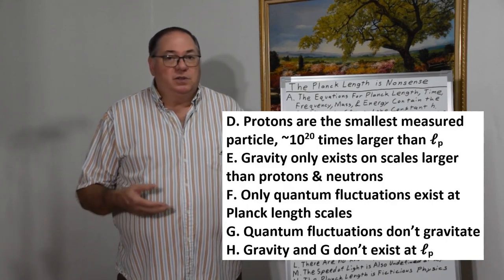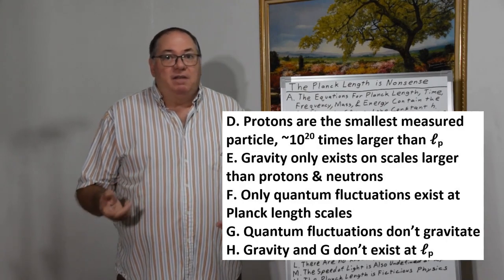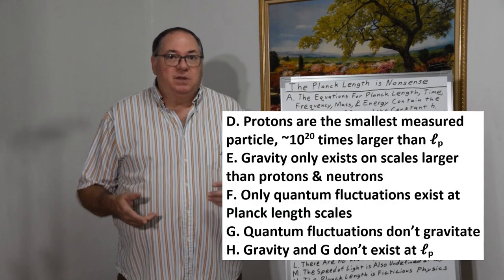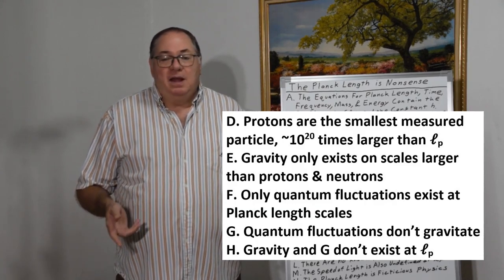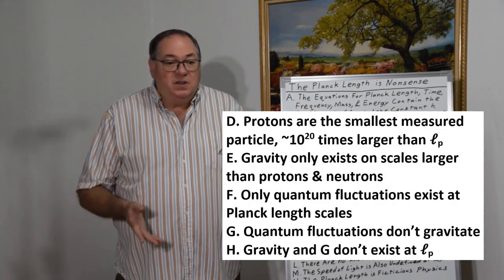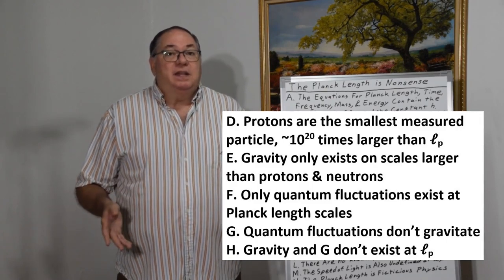So it's obvious that we're not living in a sea of Planck length sized black holes. And we also know, as I said, quantum fluctuations don't gravitate. So there's no gravity at the Planck length. So anytime anyone's talking about Planck length, you know that they haven't thought it through because there is no gravity there.